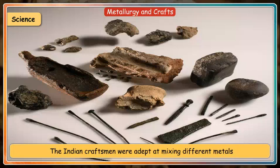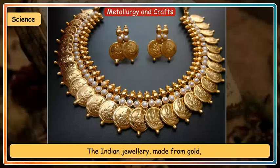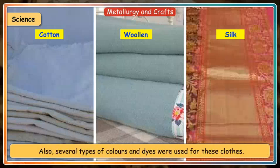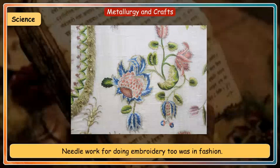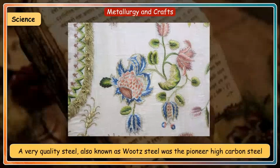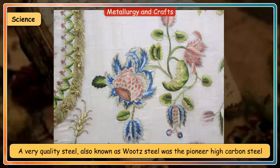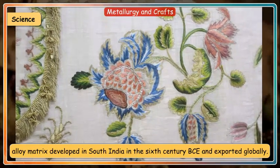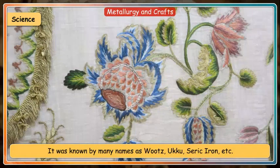Indian craftsmen were adept at mixing different metals and making fine pieces of jewellery, images and tools. Indian jewellery made from gold, silver and stone was famous all over the world. India made considerable progress in manufacturing cotton, woollen and silk garments, and several types of colours and dyes were used for colouring clothes. Needlework and embroidery were also in fashion. A very high quality steel, also known as wootz steel, was the pioneer high-carbon steel alloy matrix developed in South India in the 6th century BCE and exported globally; it was known by many names such as ukku and seric iron.